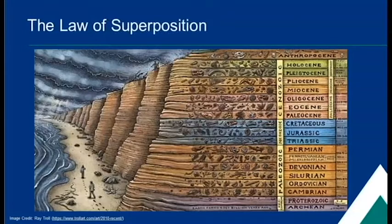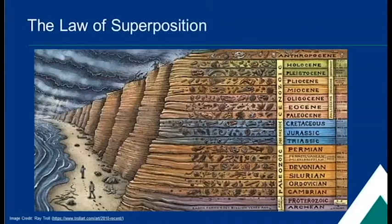Think of it like this: when you stack papers and books in your desk, the items on top were usually placed there more recently than the items below. The different divisions of the geologic time scale are based on these layers, and the approximate ages were determined by looking at where different types of rocks appear in the sequence. On this slide, you can see a diagram telling you all about the names of the different eras. We use these same ideas to figure out how old fossils are. If we find a specific type of fossil in a specific type of rock, we know that the creature is from the same time as when the rock was deposited.